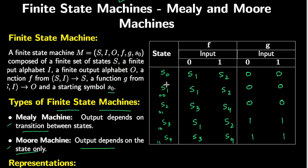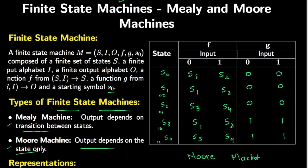From this table, the output depends only on the state. At s1 and s2 the output is 0 no matter what the input is, and s3 and s4 correspond to an output of 1 regardless of input. Therefore, this state table corresponds to a Moore machine.